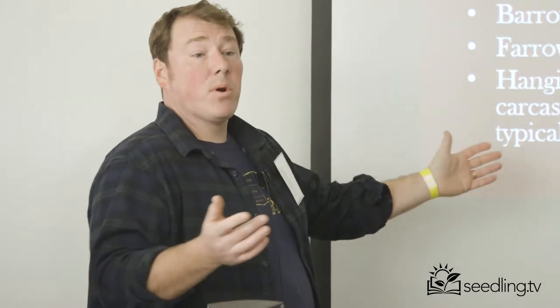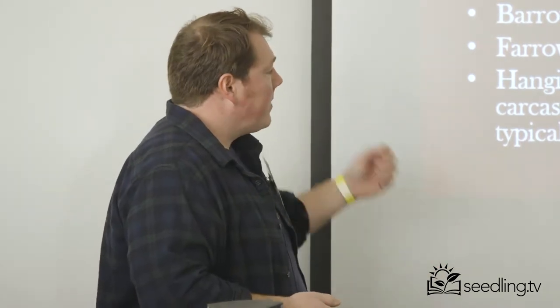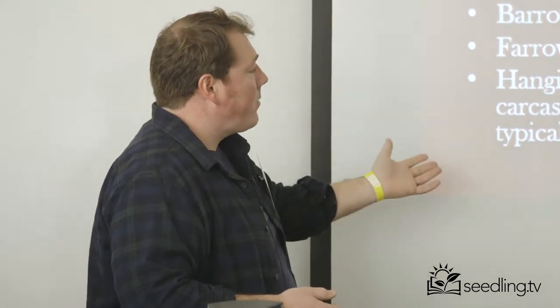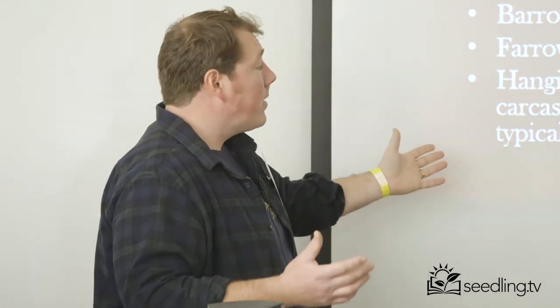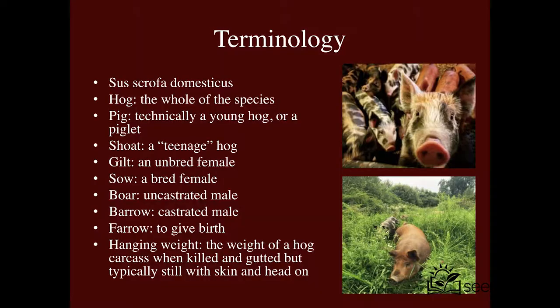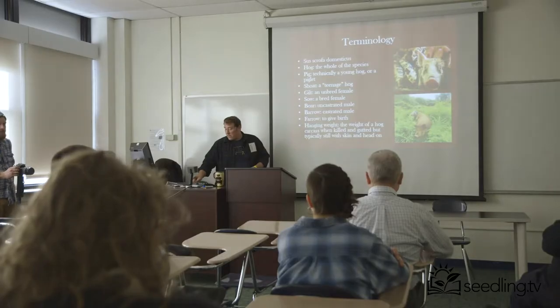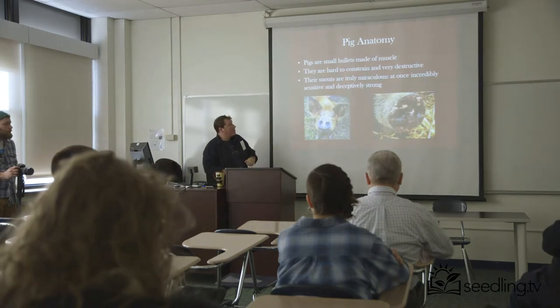Farrow is the term for giving birth when pigs have a litter. The other term that might be confusing is hanging weight, which refers to the weight of the pig carcass after it's been killed and gutted. The difference from cattle is that a pig's hanging weight traditionally includes the skin and the head attached, which becomes important when selling to restaurants or customers.